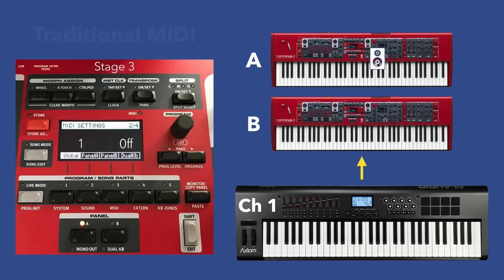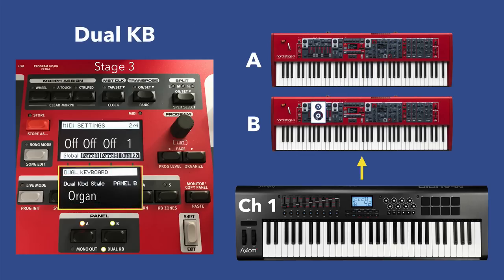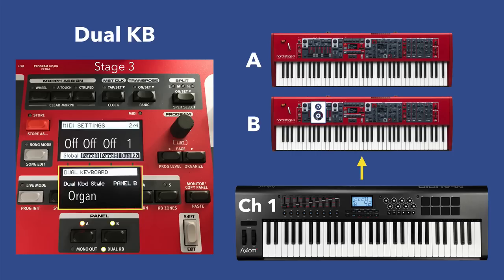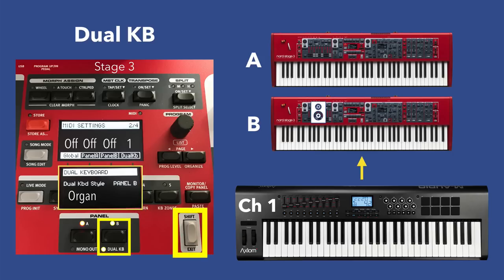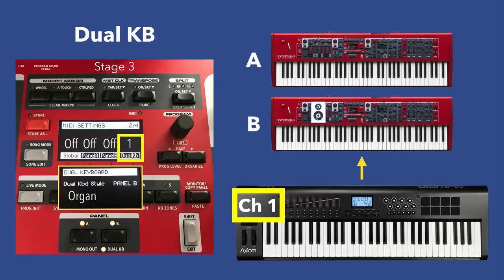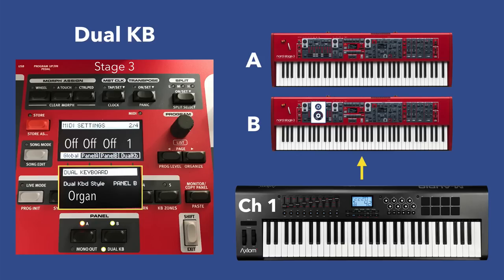That full control is not the case as much with the Dual Keyboard. To turn on the Dual Keyboard option, hold the Shift button and push the Panel B button — essentially the Dual Keyboard button — and turn that on. You'll see a new screen on the main OLED display giving you four choices; the default choice is Organ. In a dual keyboard situation, you'll most likely want Global and Panel A and B off, to avoid random MIDI happening over the global channel while trying to set the keyboard into Dual Keyboard mode.